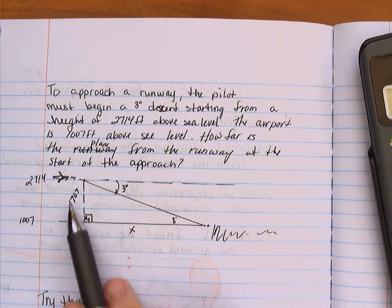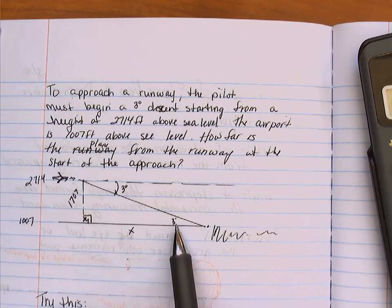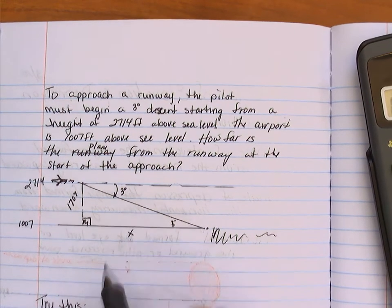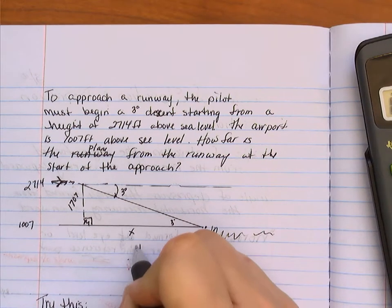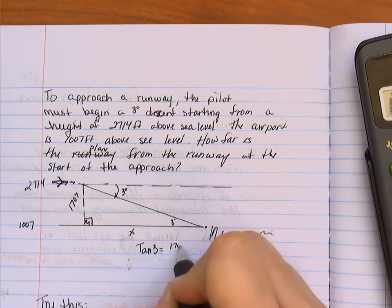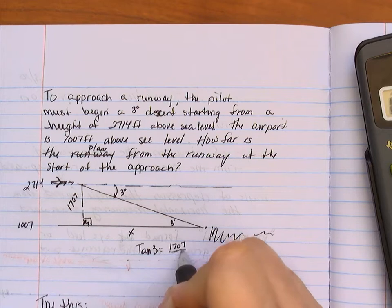Alright. So now, again, I'm looking for x. Looking at my angle, I have my opposite side and I'm looking for my adjacent side. So I'm looking at a tangent. So the tangent of 3 is equal to 1707 over x.